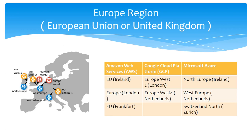For Google Cloud Platform, it supports Europe West in London and Europe West in another location in the Netherlands. On the other hand, Microsoft Azure supports North Europe in Ireland, West Europe in Netherlands, and it has a location in Zurich with Switzerland North. These are the locations supported by each of these cloud platforms in the European region.